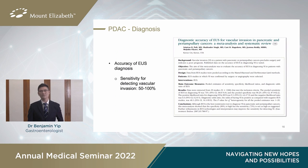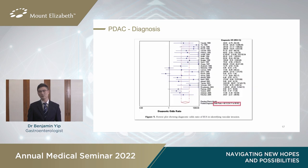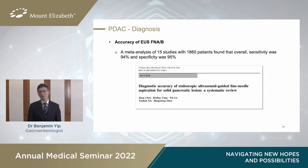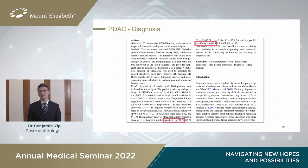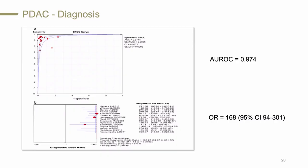What about vascular invasion? EUS tends to do quite well, with its sensitivity reaching 100%, and an odds ratio of more than 40. What is the accuracy of EUS FNAB? From a meta-analysis of over 1,800 patients, the overall sensitivity and specificity is very good — more than 90%. The AUROC is excellent as well at 0.974, with an excellent odds ratio of 168.